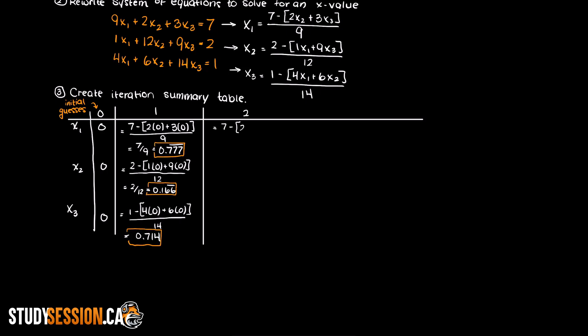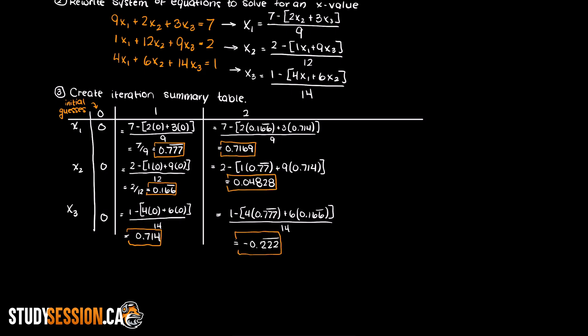Now we continue this process until we reach a sufficient level of accuracy. This part is much easier in computer programs as you can just tell the program to check every step how close your x values will get you to the right hand side of each of your equations. Just pause the video now and try to perform a couple Jacobi iterations on your own like we just did to make sure that you actually understand.